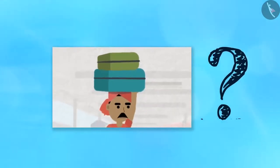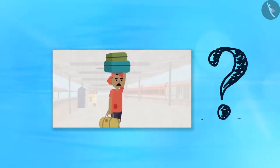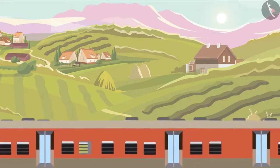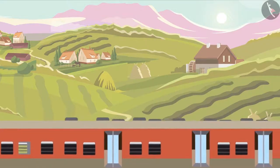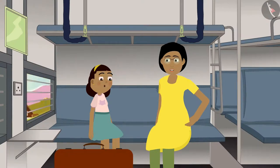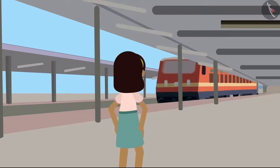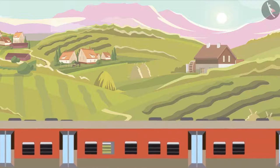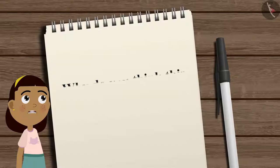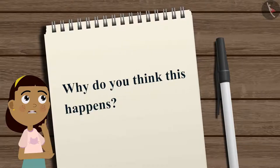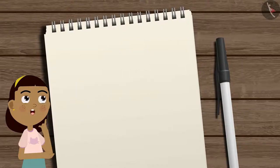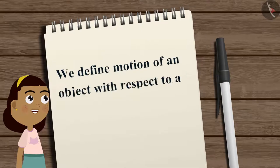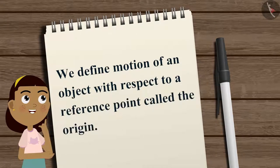But sometimes it isn't simply clear whether the object is in motion or not. For example, if you are traveling on a train, a person sitting next to you is stationary according to you, but for someone standing on the road observing the moving train, the same person is in motion. This is because we define motion with respect to a reference point called the origin.